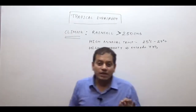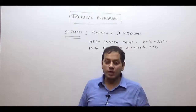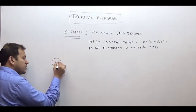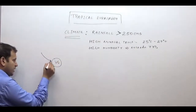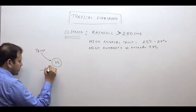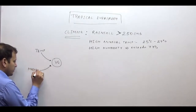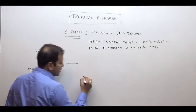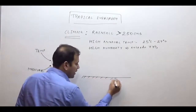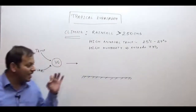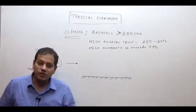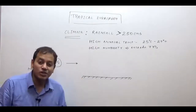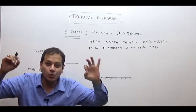Two inputs are required for vegetation growth: temperature and moisture. If there is high temperature throughout the year and high moisture throughout the year, trees grow throughout the year. Because the average annual rainfall is high, moisture is high, and because of high annual temperature, trees grow throughout the year and therefore the forest looks evergreen.